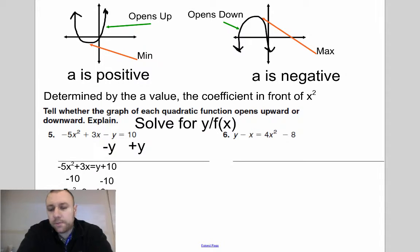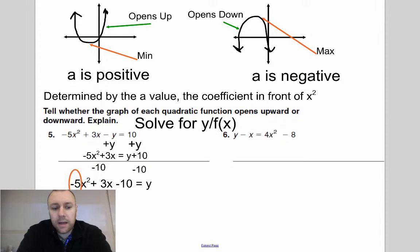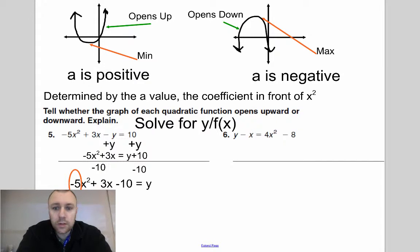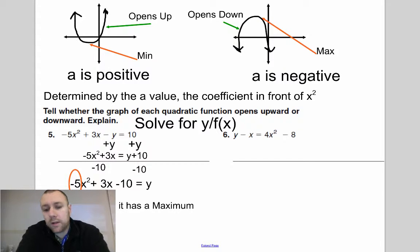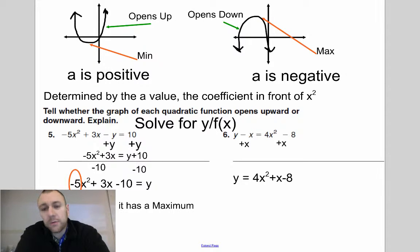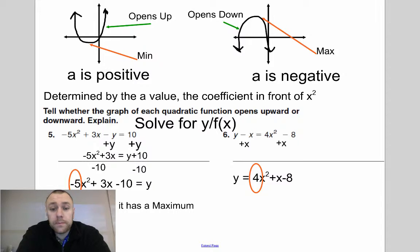My equation for that has a negative five in front of the x squared, so a is negative — meaning it's going to be a maximum. In the other case, all I have to do is add x on both sides. I'm left with that equation and I look at the four, which is positive, so it's going to have a minimum.